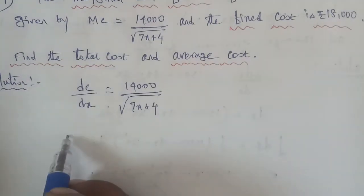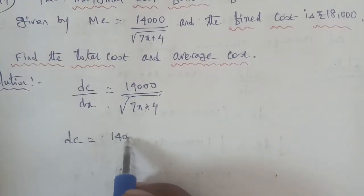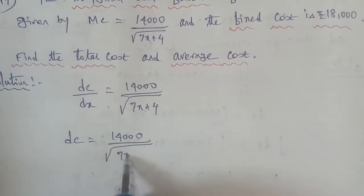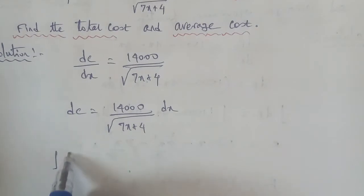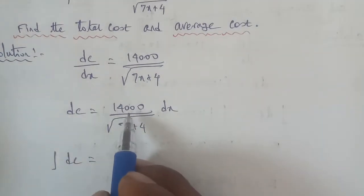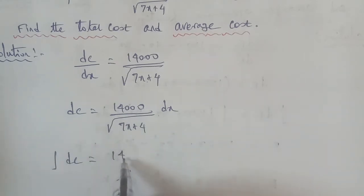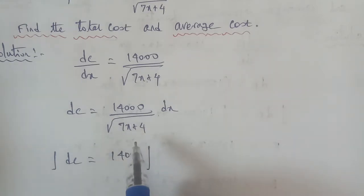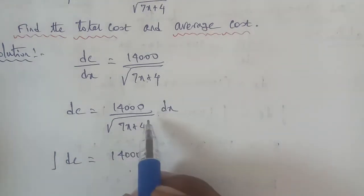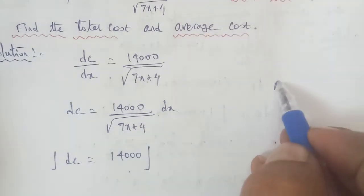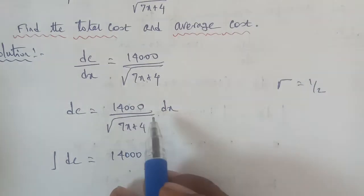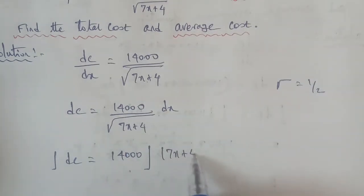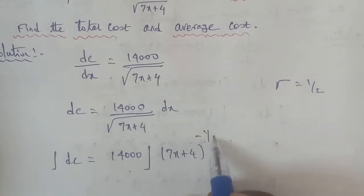Separating variables: DC is equal to 14,000 divided by square root of 7x plus 4, into DX. Next, integrating on both sides. The square root in the denominator can be expressed as a power — the root can be expressed as 1 by 2, so the term becomes (7x plus 4) to the power of minus 1 by 2, into DX.